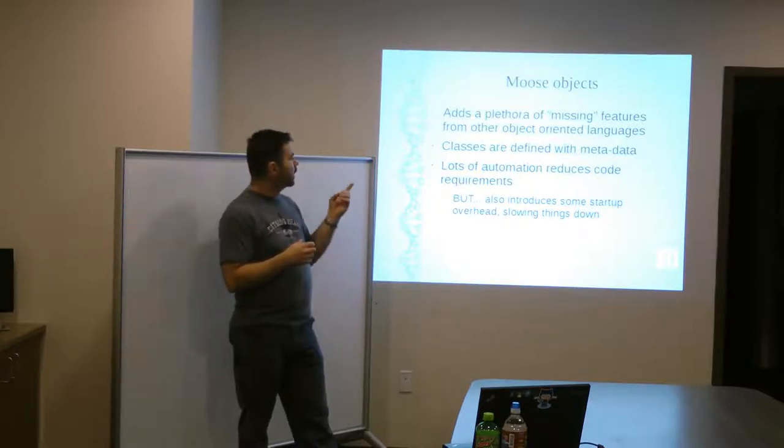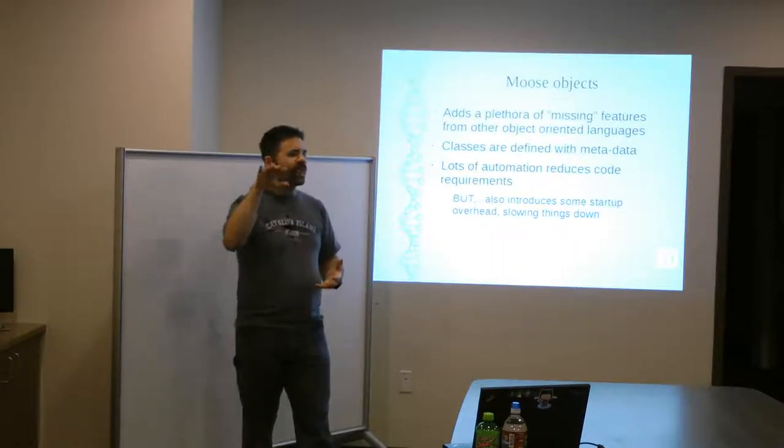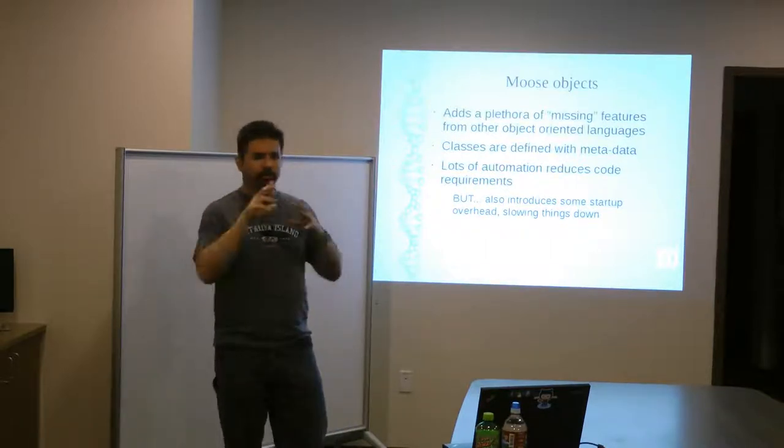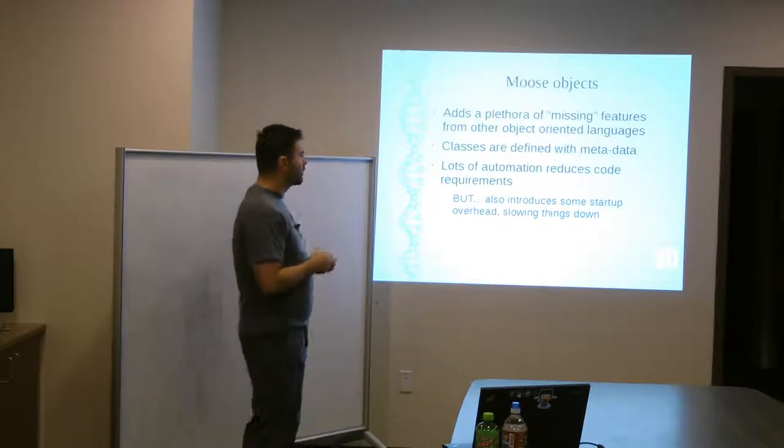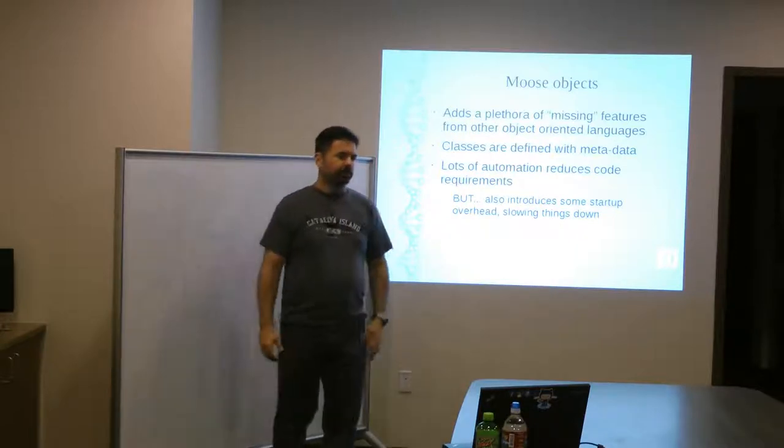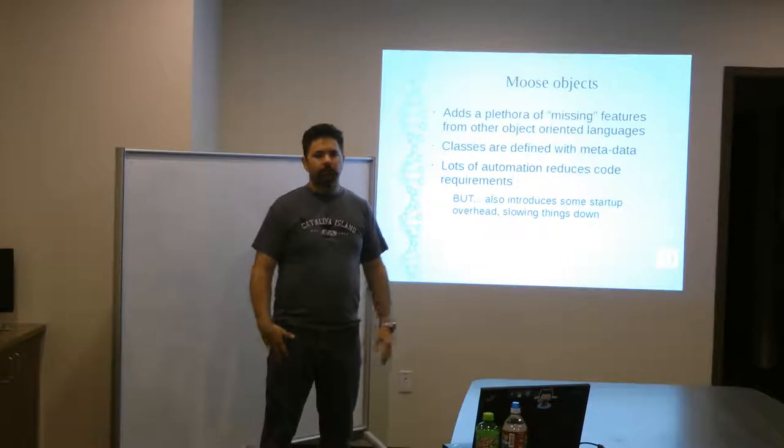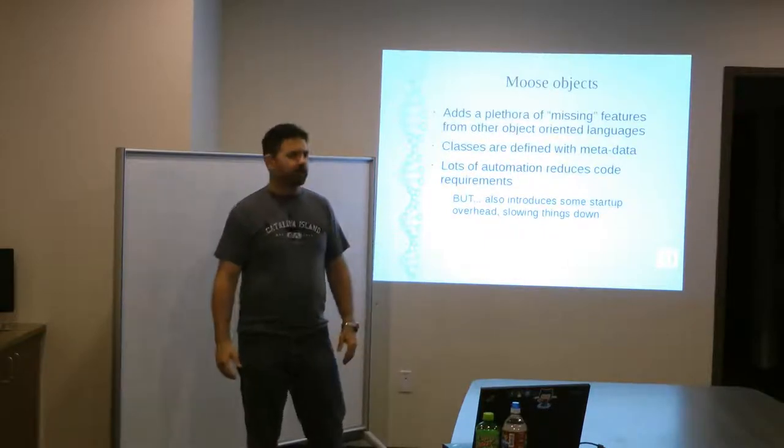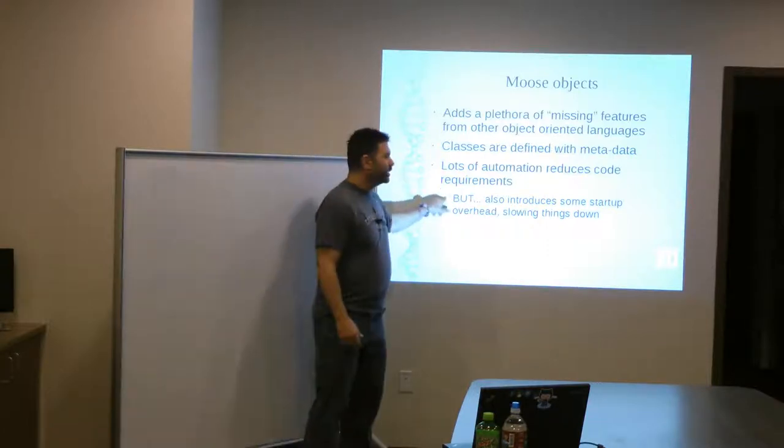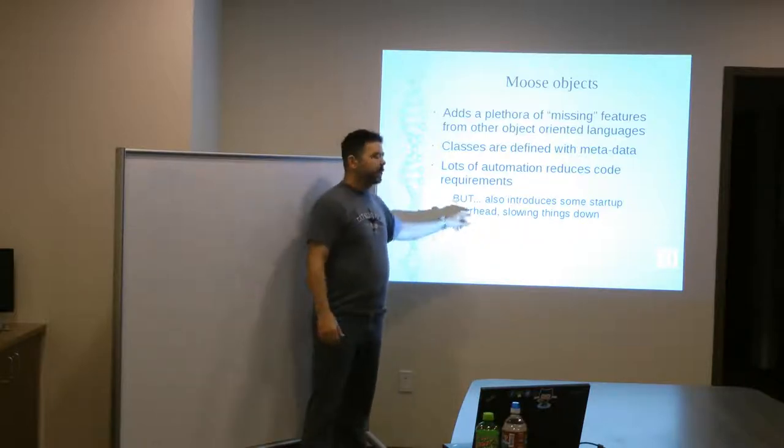And it's becoming a very important concept for Perl going forward. It adds a plethora of missing features from other object-oriented languages that Perl just hasn't had. And the classes are defined with metadata, which means that you just have information about the classes and then the Moose code goes through and parses that and creates your objects for you. A lot of automation reduces your code requirements. We'll find out that, you know, something you would do in Perl 5 objects that would take 80 lines of code, you can do with Moose in 5.